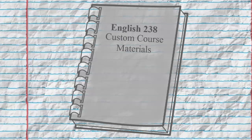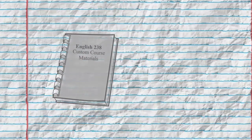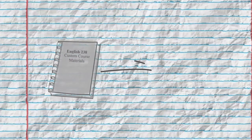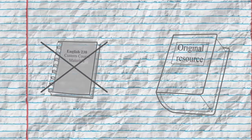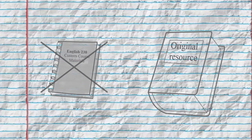Depending on the citation style you're using, as well as your professor's preferences, you may just cite a work using the citation information provided to you in the course pack — that is, the information for where the work was originally published when your professor collected it for the course pack. In this case, you wouldn't mention that you found it in a course pack at all, and the citation would just look like a normal citation for a book chapter or journal article, or whatever type of source it may be.